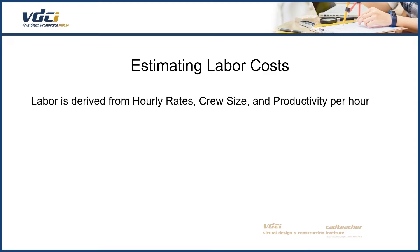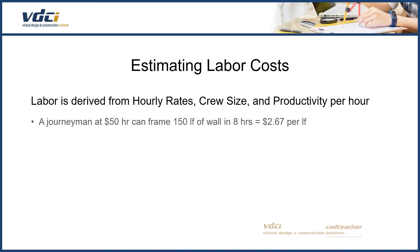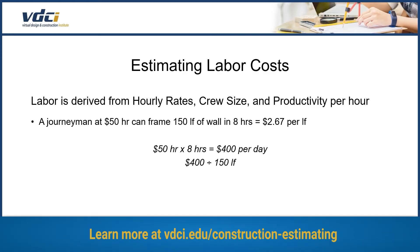Labor is derived from hourly rates, crew size, and productivity per hour. This might sound complicated, but this all rolls up into a much simpler labor cost. It's good to know all the increments and miscellaneous components required to come up with the total overall cost of your labor. A good example: a journeyman at $50 an hour can frame 150 linear feet of wall in 8 hours — that's $2.67 per linear foot. That's $50 an hour times 8 hours equals $400 per day, divided by 150 linear feet per day, equals $2.67 per linear foot.